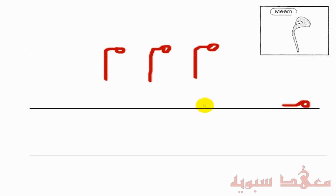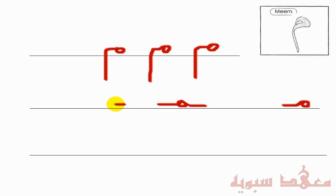In the middle form, from the previous letter, you come up and you go around and then come there and then go to the next letter. And the final form is as follows: from the previous letter, you go up, come around, and then go down.